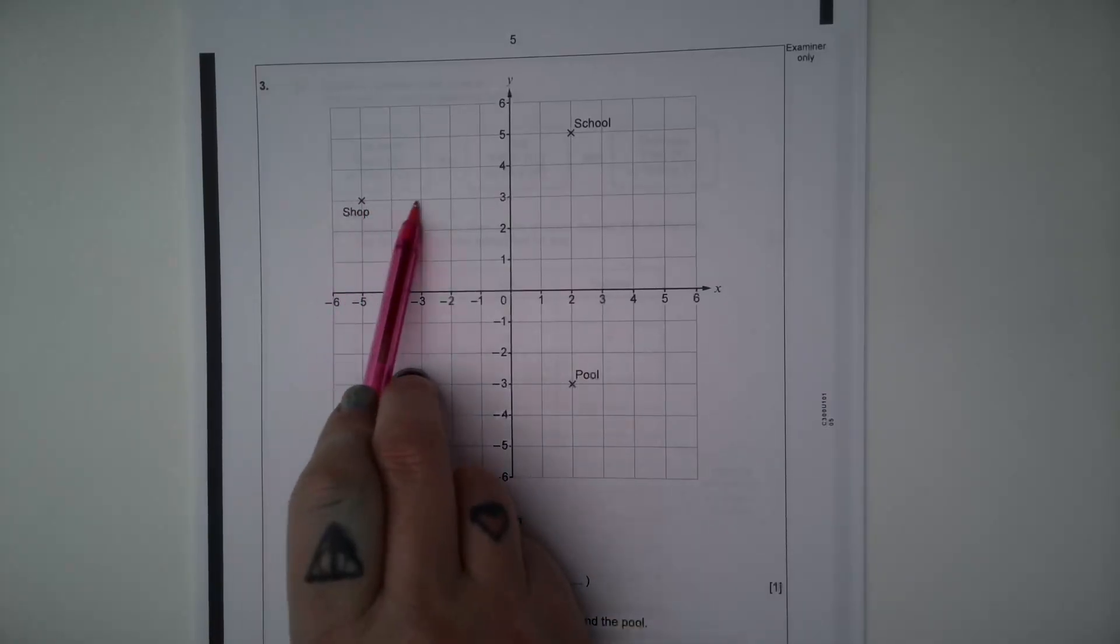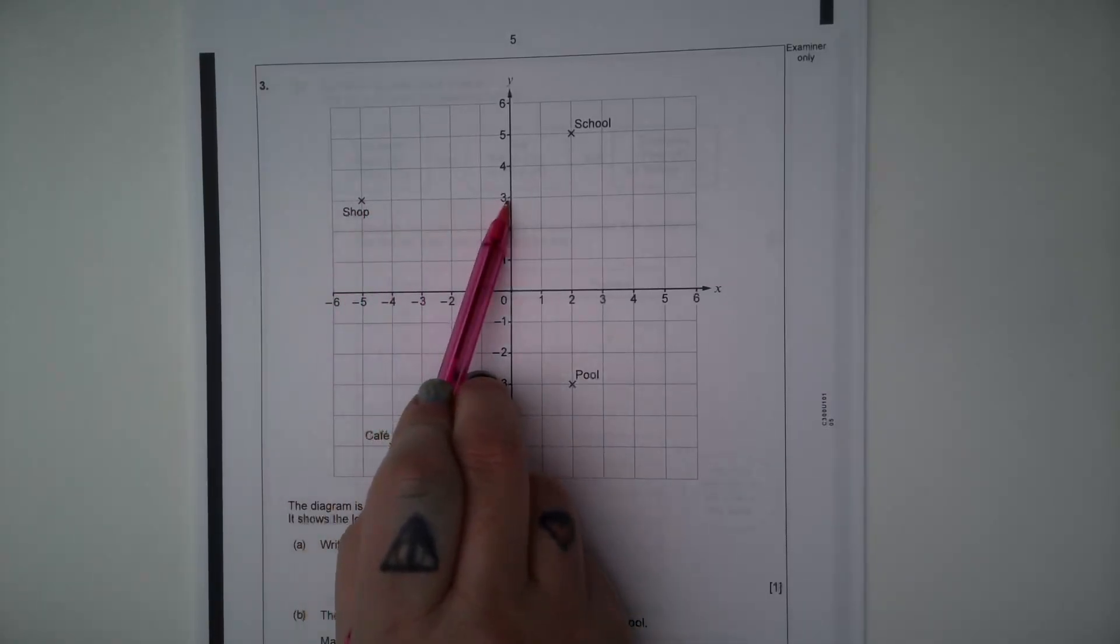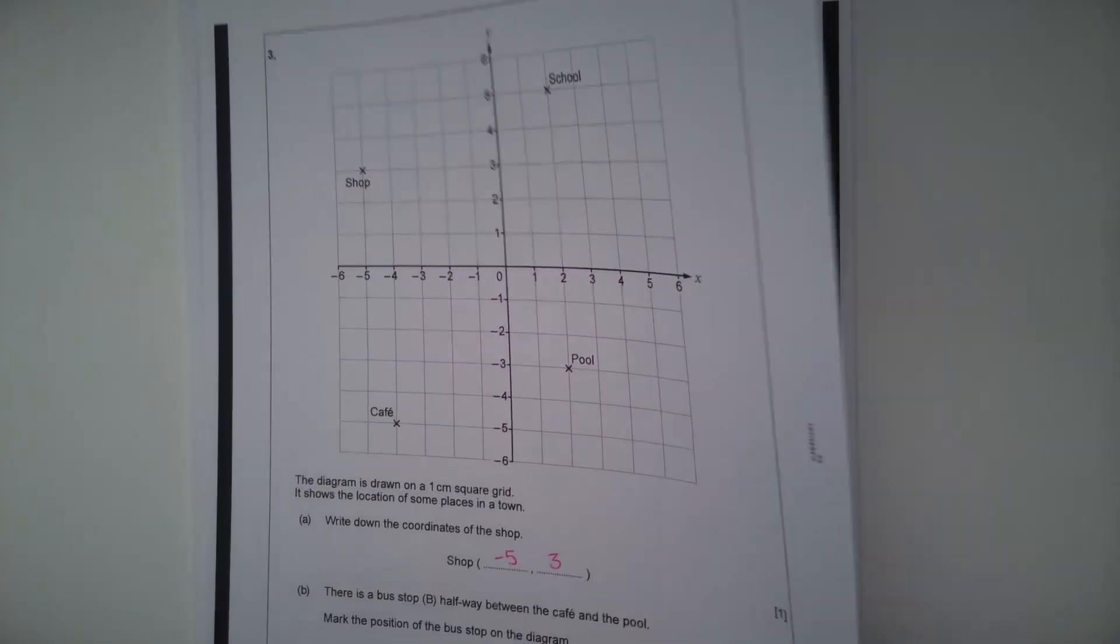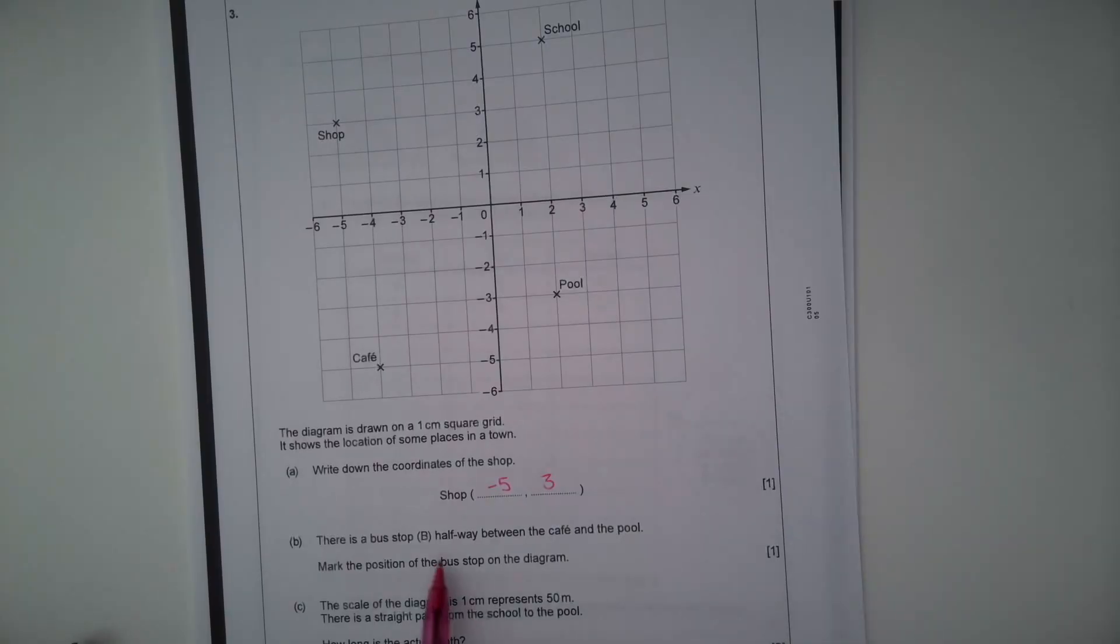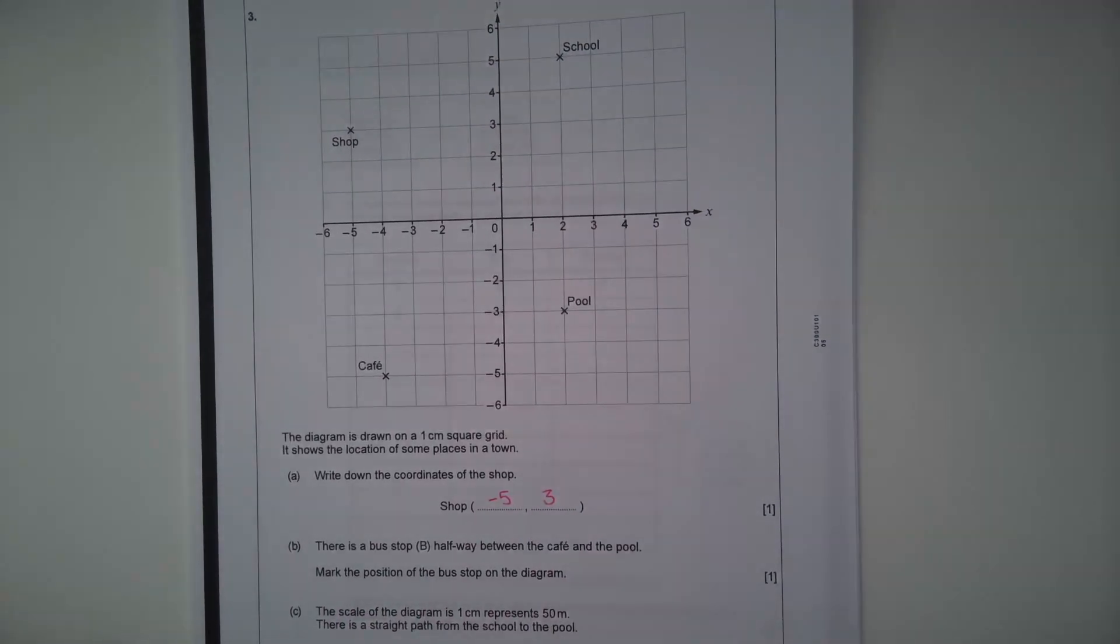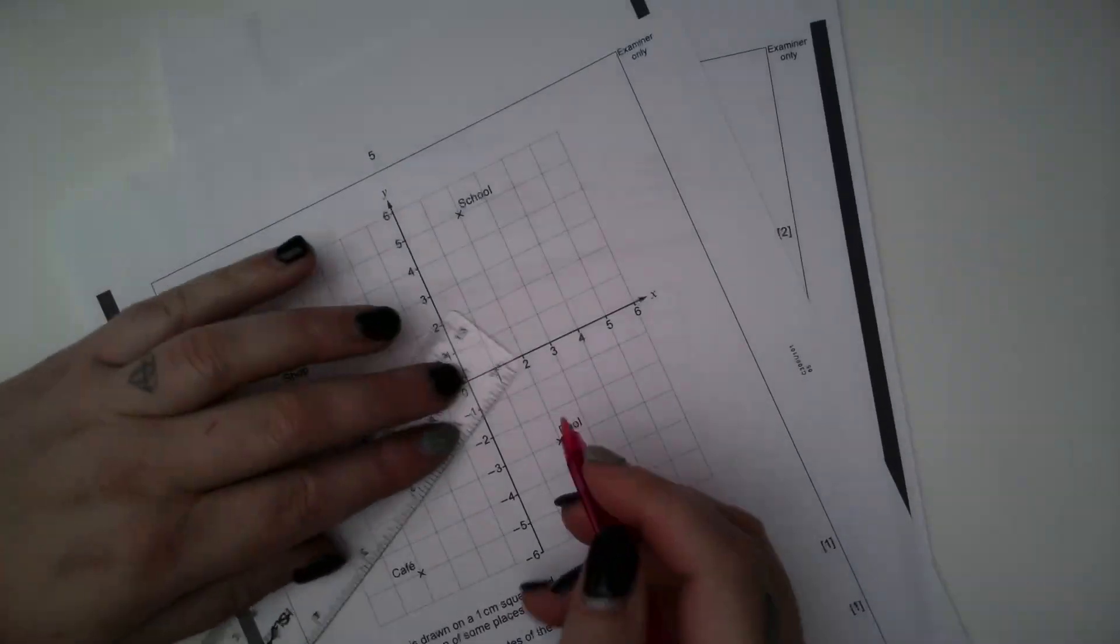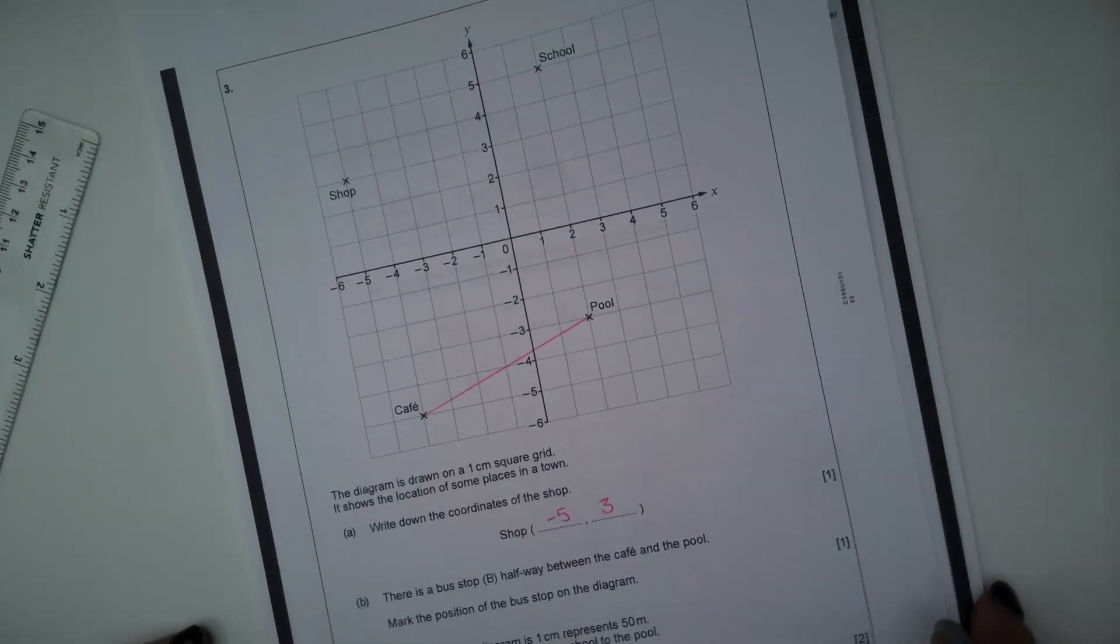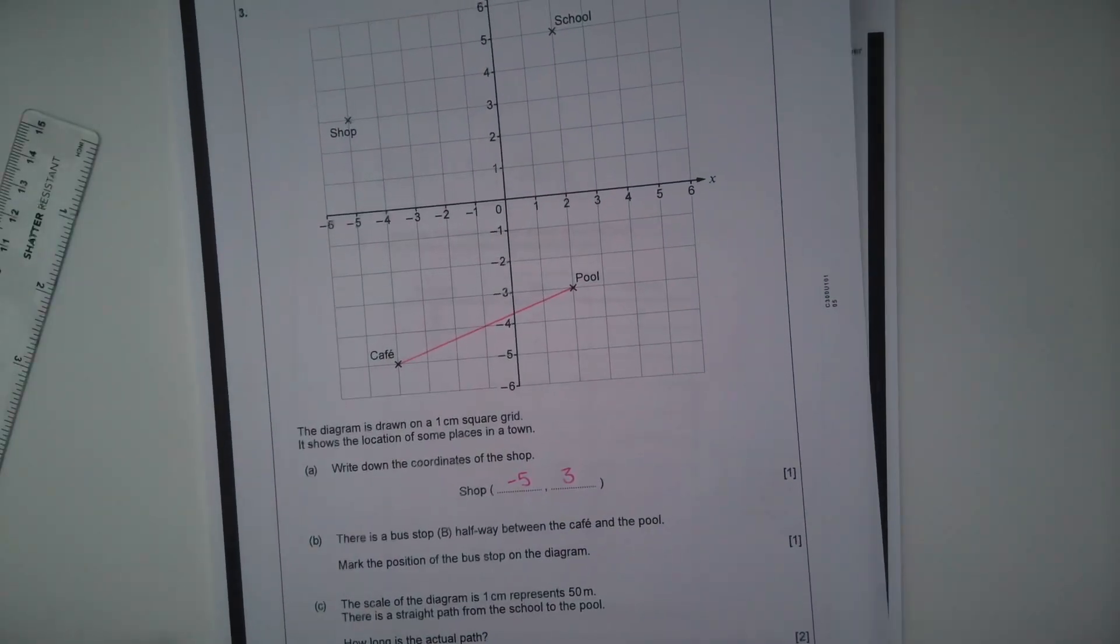There is a bus stop, B, halfway between the cafe and the pool. Mark the position of the bus stop on the diagram. So we're going between the cafe and the pool and we're looking for that halfway point. So we're looking for the midpoint.